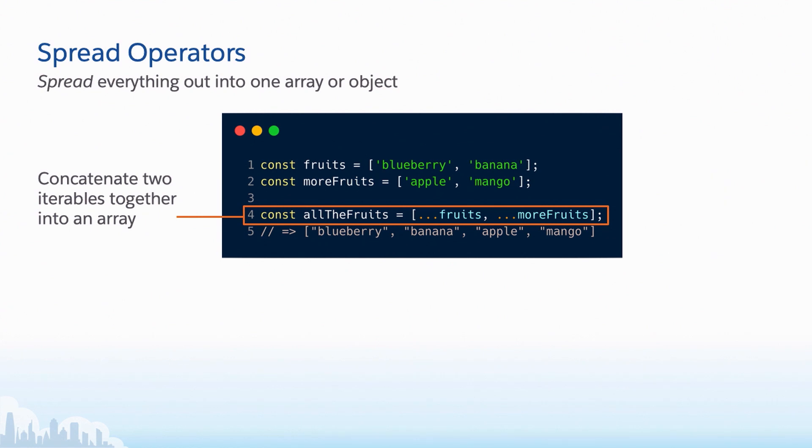Spread operators. So I promised you they look very similar. You can think of spread operators as spreading everything out into one array or one object. So a classic example of using a spread operator is to concatenate things together. In our code example here, we have on line one, we have an array of fruits. And on line two, we have an array of more fruits. And then on line four, we're setting all the fruits equal to the spreading out of fruits and more fruits. So as you can see, it's just those elements all collected into one array. This is very similar if you were to use array.push or array.concat. And we're not modifying any of the original arrays here. This is creating an entirely new one. So that's handy.